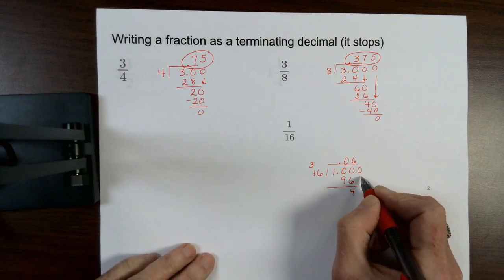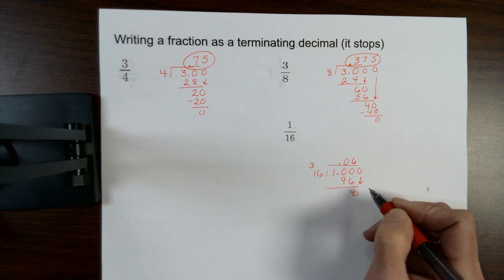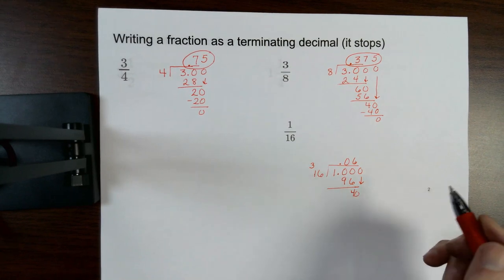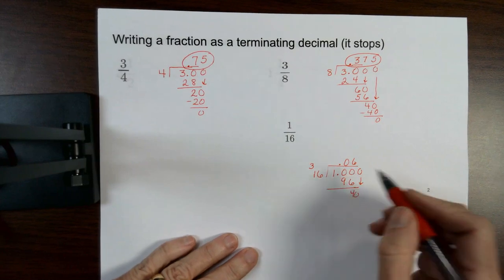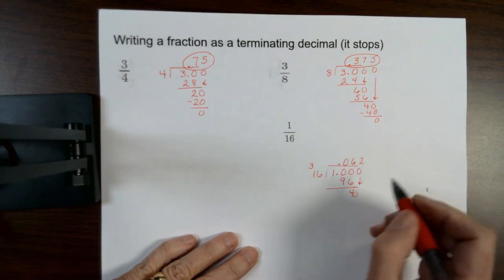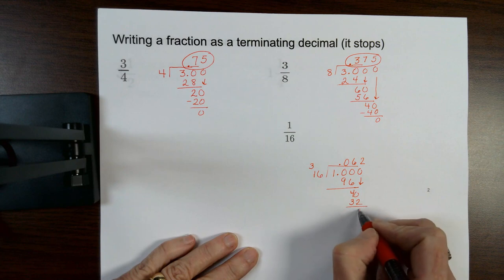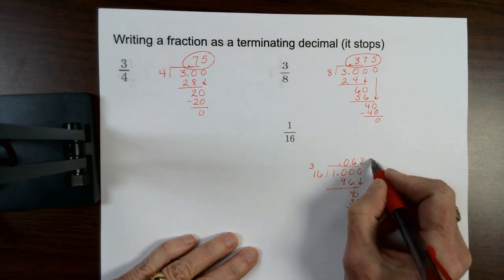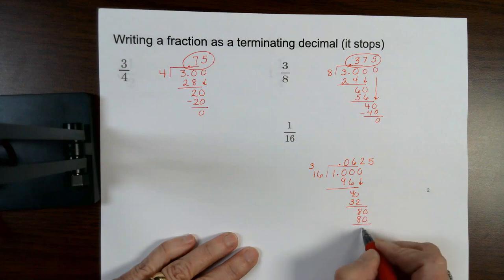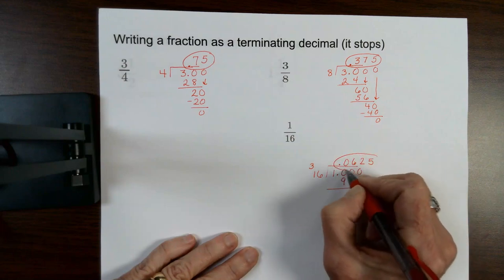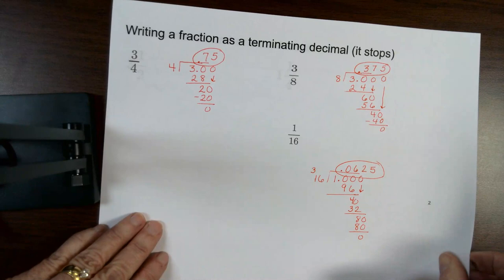So that's going to give me a 4. And I'm going to add a 0 and bring it down. Then I'm going to divide 40 divided by 16. That's going to go 2 times. I'm going to add a 0 and bring it down. And that's going to give me 5. 5 times 16 is 80. And that's going to give me a decimal value of 0.0625.